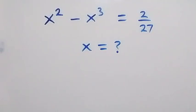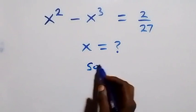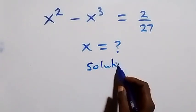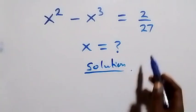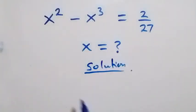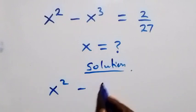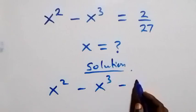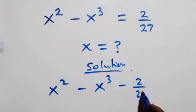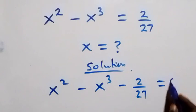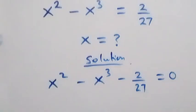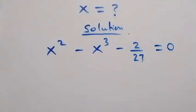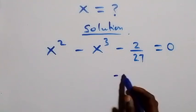Hello, you are welcome. How to solve this nice problem. From what is given here, let's take 2 over 7 to the left hand side and we have x squared minus x cubed, then minus 2 over 27 equals to zero.